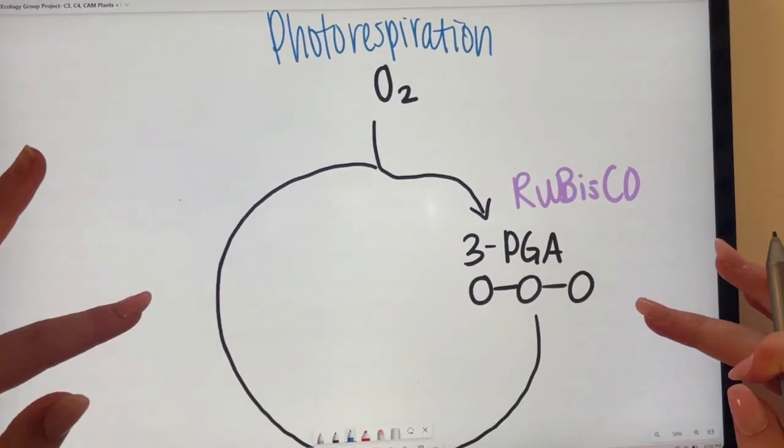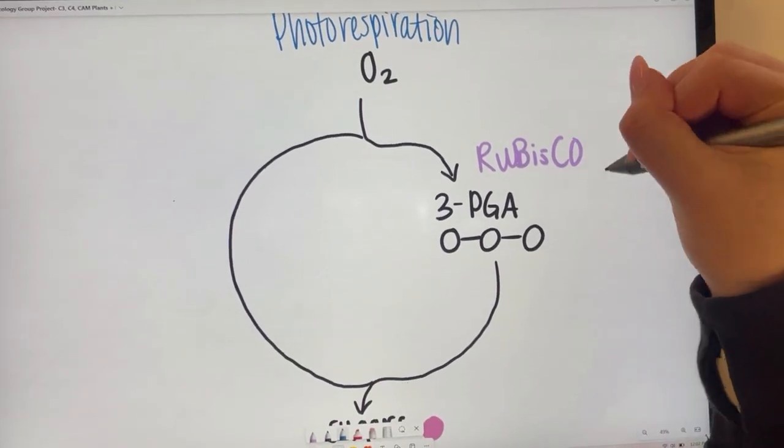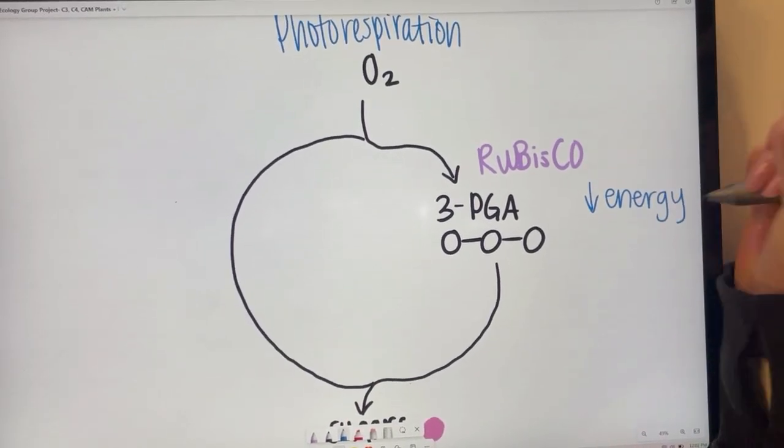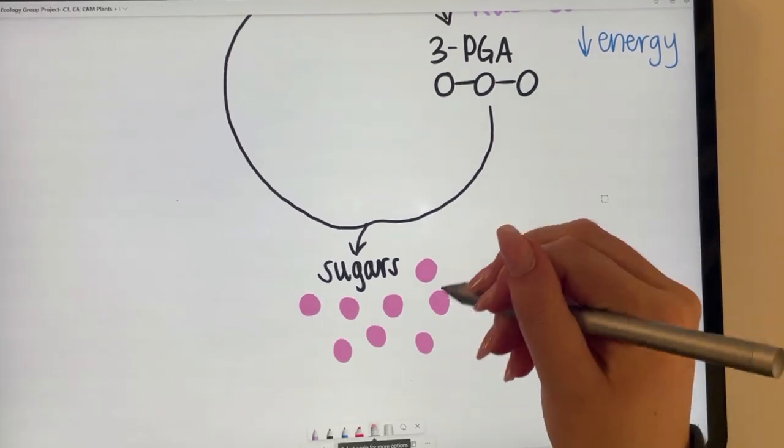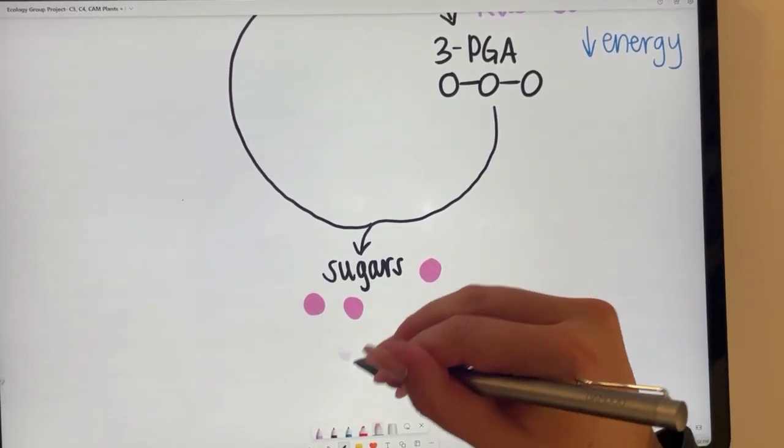However, when photorespiration occurs, rubisco picks up oxygen as a substrate instead of carbon dioxide. Thus, when rubisco initiates this pathway, it's making a big mistake, causing the plant to waste energy and decrease sugar synthesis.